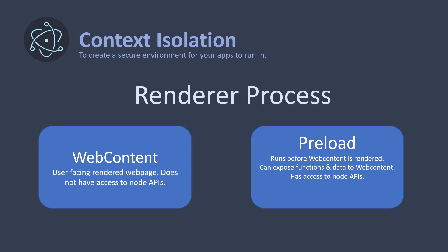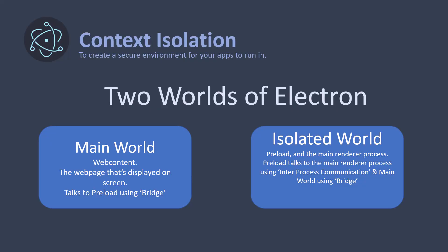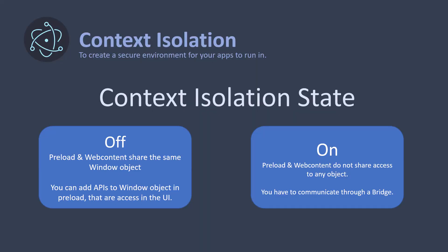Effectively, they run in two different worlds: web content in the main world, and the preload and the rest of your app in the isolated world. You've probably heard about the main world and isolated world — it's time to understand them better. In the main world, there's only web content — the web page displayed on screen — and it talks to the isolated world using preloads. In the isolated world, you have the preload file which talks to the rest of the app. Code running in the preload can talk to the main process using inter-process communication, and when it needs to communicate with the main world it uses something called a bridge.